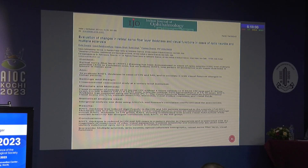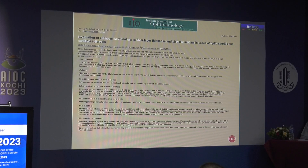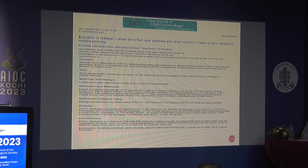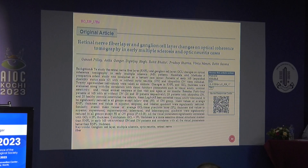I'm discussing an important paper where RNFL thickness and visual functions were assessed in patients with optic neuritis and multiple sclerosis. The study concluded that RNFL thickness is reduced in optic neuritis patients and even in multiple sclerosis patients where an optic neuritis attack has not yet happened — deranged parameters are still visible. The pattern was similar to that in Caucasian eyes.